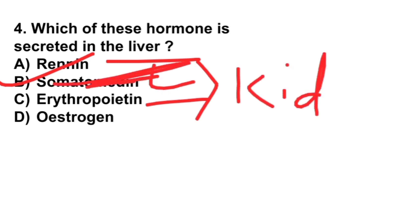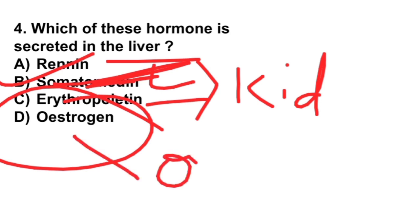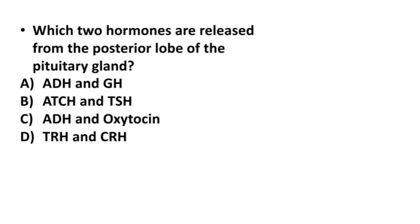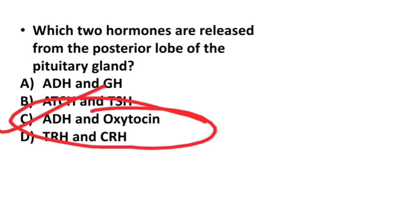Okay, now next, which two hormones are released from the posterior lobe of the pituitary gland? ADH and GH, ACTH and TSH, ADH and oxytocin, or TRH and CRH? Its correct answer is option C. ADH, anti-diuretic hormone which is also known as vasopressin, and oxytocin are secreted by posterior pituitary. Except these two hormones, all are secreted by anterior pituitary.